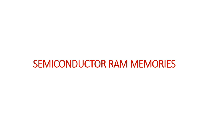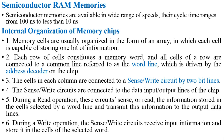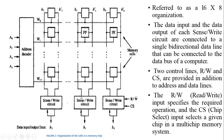Welcome back to this video tutorial. We will discuss the internal organization of semiconductor RAM memories. Semiconductor RAM memories are available in a wide range of speeds and their cycle time ranges from 100 nanoseconds to less than 10 nanoseconds. Now we can consider the internal organization of a memory chip. For the organization of a memory chip we need a word line, sensor, write circuit, and address decoder unit. All these units are available in this diagram, which is a simple organization representation of a memory chip.